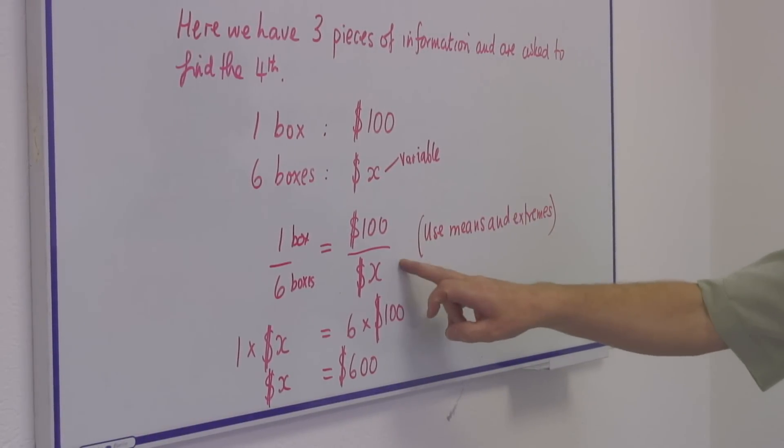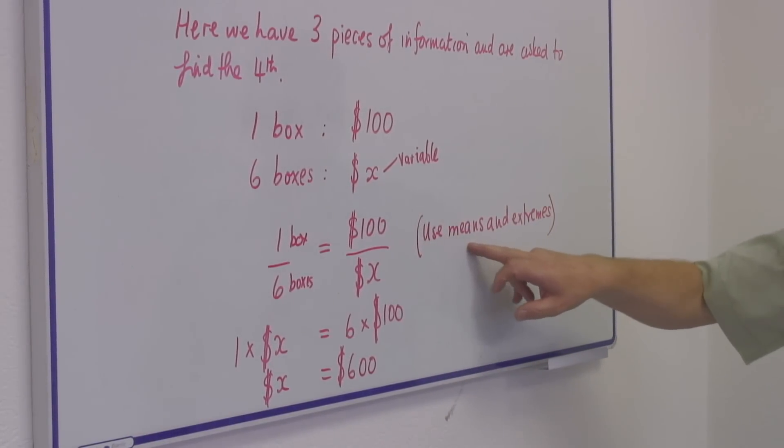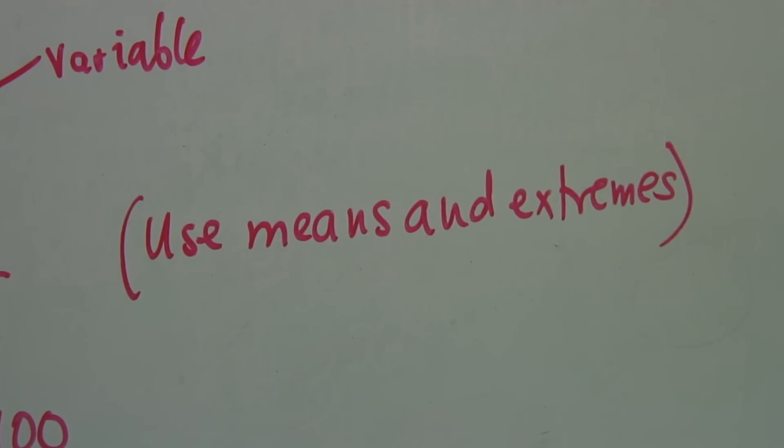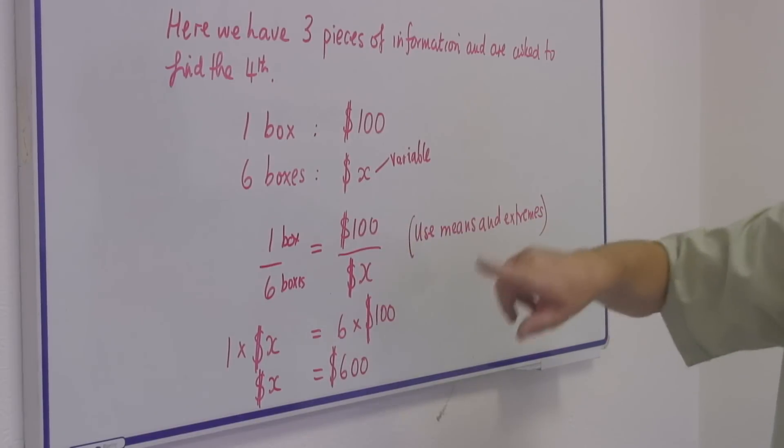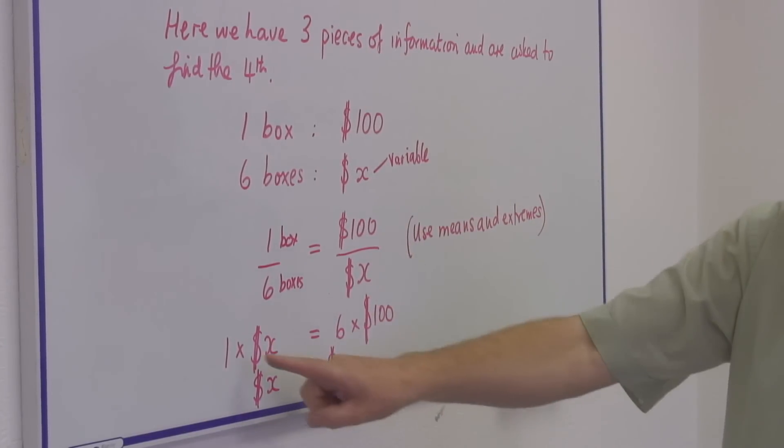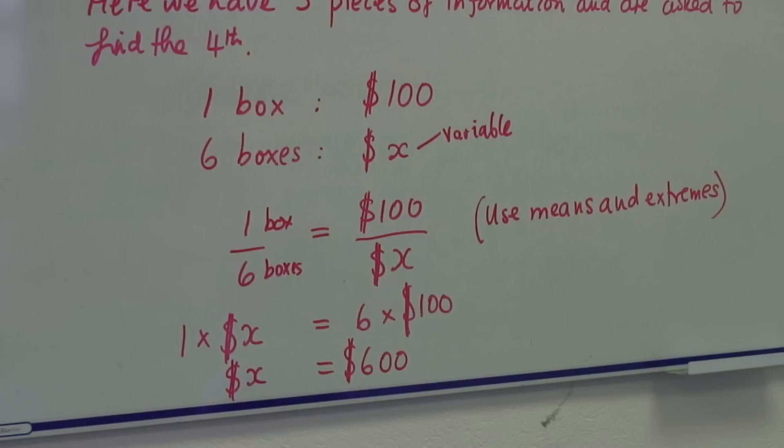And to solve it, we can use what we call means and extremes. Here are the means and here are the extremes. By multiplying those out, we get one times x dollars equals six times $100. X dollars is $600. So the price of six boxes now is $600.